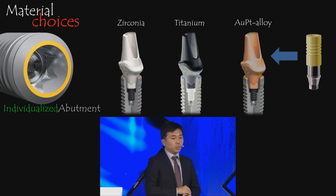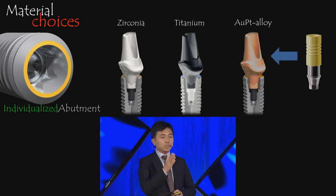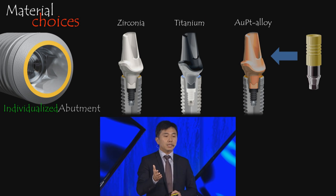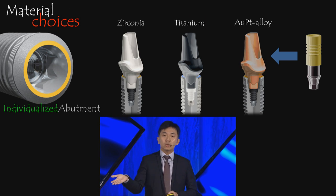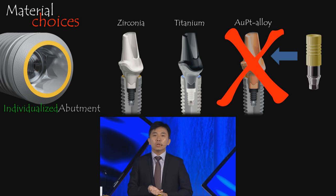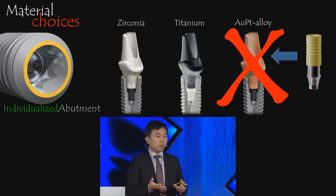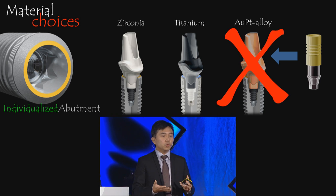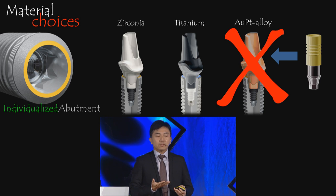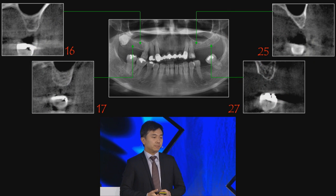For material choice, we sometimes have to choose between zirconia, titanium, and gold. In recent times, with CAD/CAM, we are able to choose good materials in terms of titanium and zirconia.